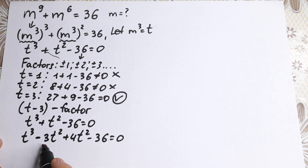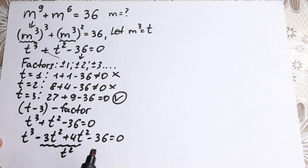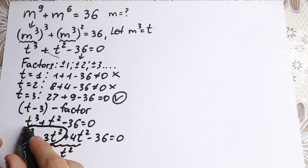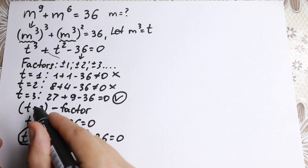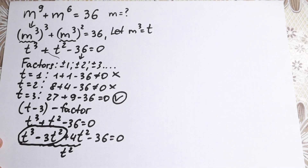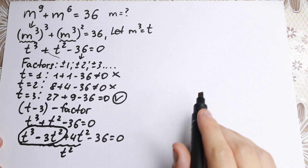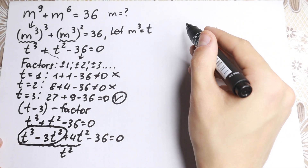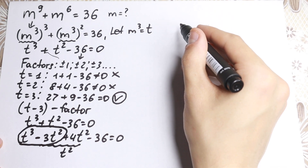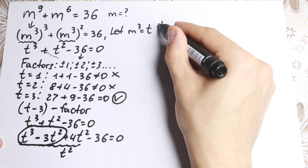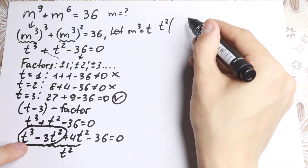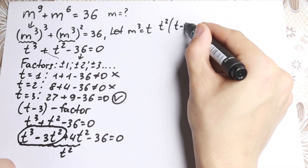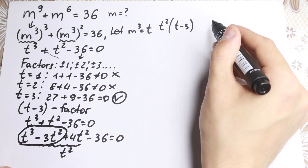Notice that −3t² + 4t² still gives us 1·t², so nothing has changed. But looking at t³ − 3t², if we factor out t², we get t²(t − 3). That gives us our known factor right here.